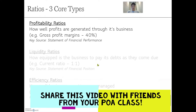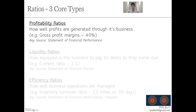There are three types of ratios tested in all levels: profitability, liquidity, and efficiency. Profitability, like the name suggests, will tell us how profitable the business is, especially as compared to the business's historical trends or compared to the same types of businesses within the same industry. One measure of profitability in terms of ratios is gross profit margins, and the inputs are found usually in the statement of financial performance.